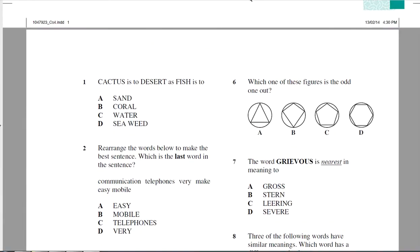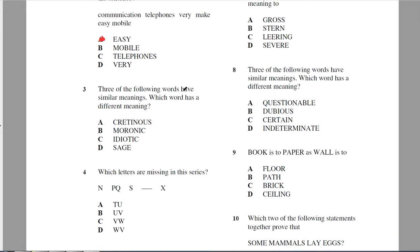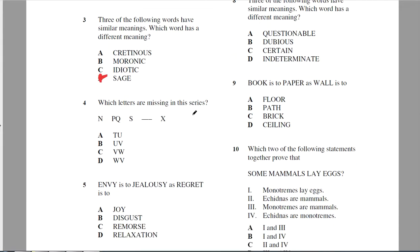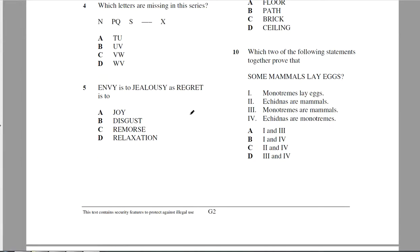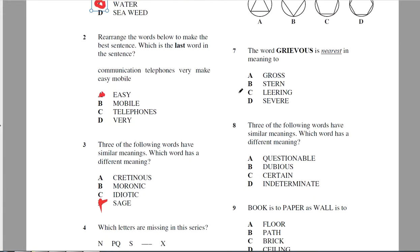I'll get started here. Question one, cactus is to desert. Well, a cactus grows in the desert, so a fish is to water. I'll just answer these so I can remember which ones. Rearrange the words below to make the best sentence. Telephones make, mobile telephones make communication very easy, so it should be easy. Three of the following words have similar meanings. Those three words all mean stupid, so it's sage, which means wise. I might skip this code one because that might take me a bit of time. Envy is to jealousy as regret, so envy and jealousy are the same, so regret is to remorse. So I've done four out of the five in around a minute.